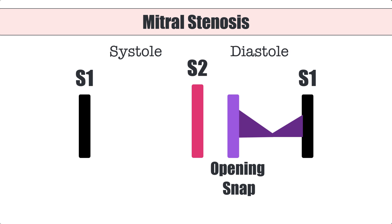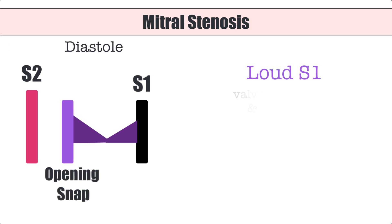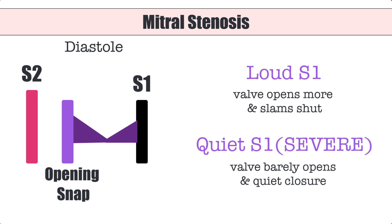Once the door is open, you'll hear that diastolic murmur all the way until the door is closed — all the way until that S1 heart sound. In earlier stages of mitral stenosis, the door is forced open but fairly ajar, so when it comes to closing it'll be slammed shut. But in very severe mitral stenosis, the door may not open very much at all, so when it closes it can be quite quiet, affecting the loudness of S1. S1 could also be loud due to a mechanical mitral valve, which has its own clicky metallic sound, but it still sits around that S1 placement in the cardiac cycle.